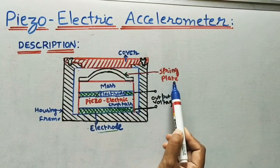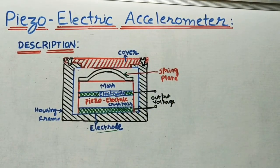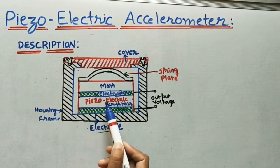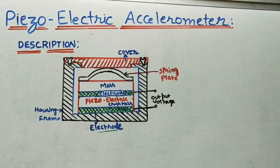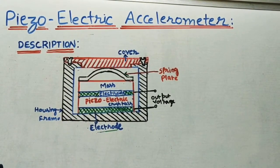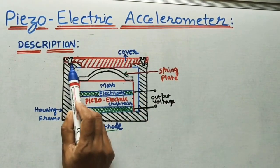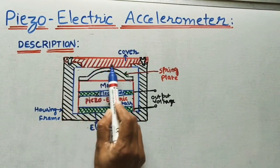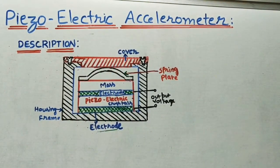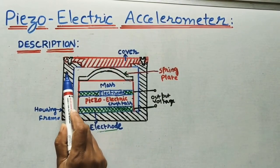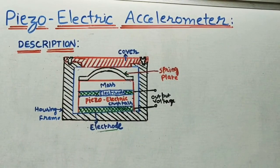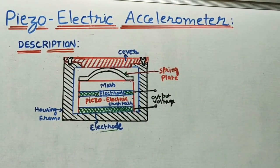The fourth part: the entire arrangement — that is, the spring, mass, and electrode-crystal arrangement — is kept in one housing frame. Above this housing frame we keep one cover, which touches the spring as shown in the diagram. This cover is fitted to the housing frame using a nut and bolt arrangement. These are the main four parts of the piezoelectric accelerometer.